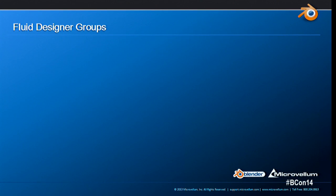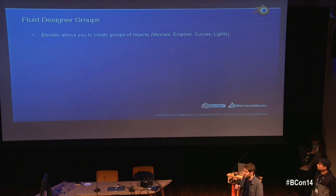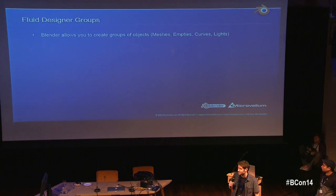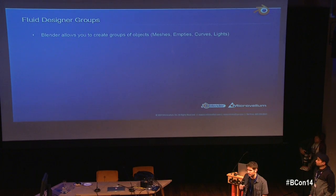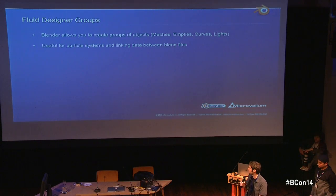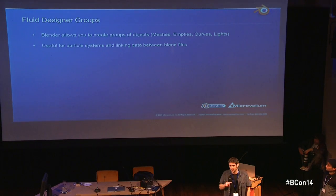So let's talk more about these groups — products, inserts, and parts. These are just standard groups inside Blender, which are collections of objects such as meshes, empties, curves, and lights. From what I know, groups are pretty much just used for particle systems and linking data between scenes — you can instance those objects in a group, and that works well.